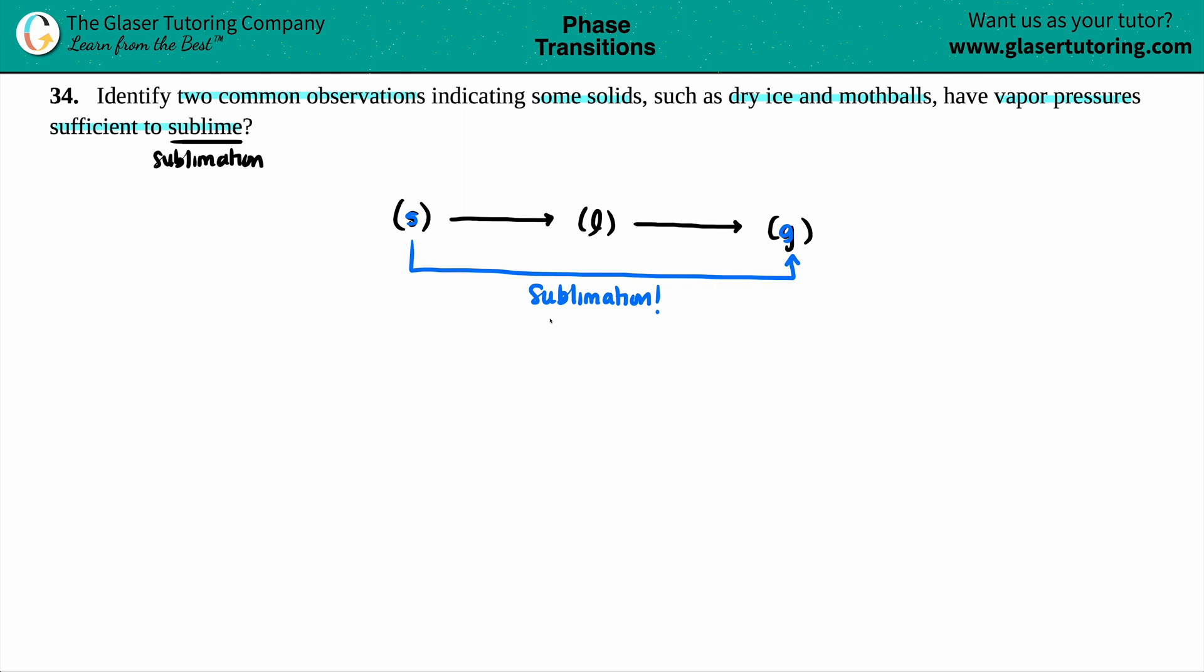Okay, so now we need evidence or we need two common observations to know that this actual idea exists. Well, one of them is coming right from the diagram that we see here, right? If we are observing a substance or a solid that is subliming, what are we not going to see? What phase are we not going to see? Yeah, you got it. We're not going to see the liquid phase. So that's one observation.